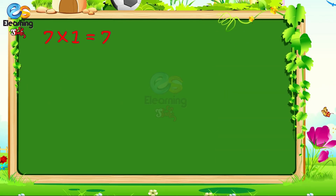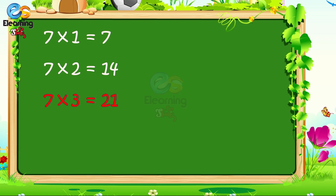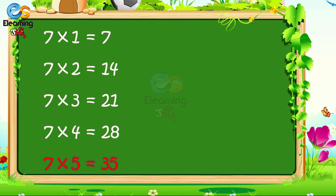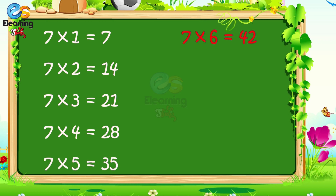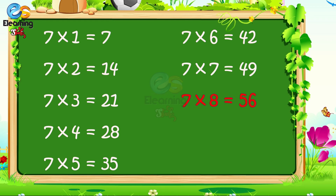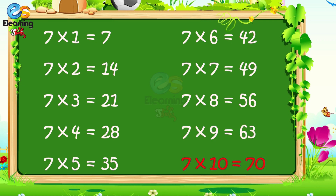7 1s are 7. 7 2s are 14. 7 3s are 21. 7 4s are 28. 7 5s are 35. 7 6s are 42. 7 7s are 49. 7 8s are 56. 7 9s are 63. 7 10s are 70.